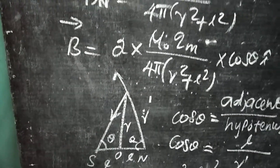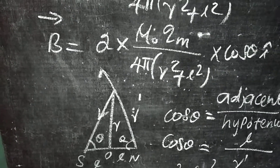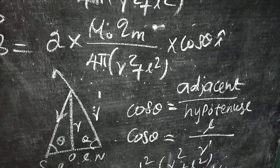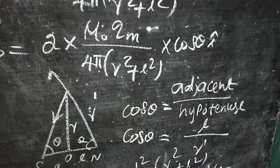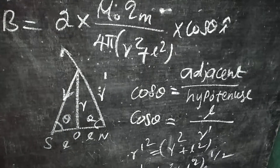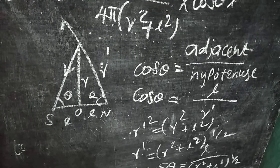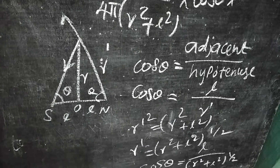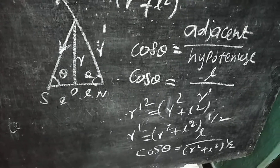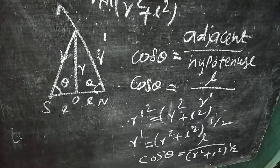From the diagram, for angle theta, the opposite side is R, hypotenuse is R prime, and adjacent side is L. We find cos theta: cos theta equals adjacent over hypotenuse, that is cos theta equals L over R prime. Since R prime equals the square root of R squared plus L squared, substituting this R prime value gives cos theta equals L divided by the square root of R squared plus L squared.